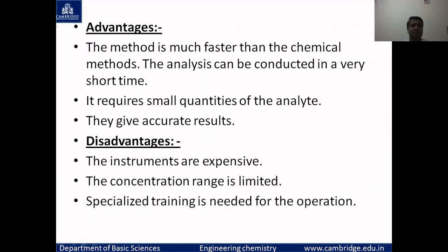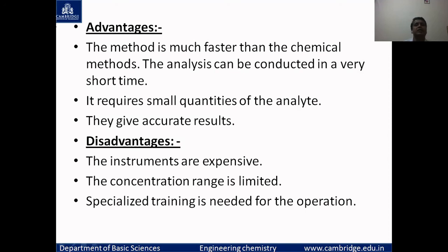What are the advantages of instrumental methods of analysis? This method is much faster than chemical methods. In conventional volumetric methods you need to spend more time, but here the analyte can be determined at a faster rate, giving results quickly in a very short span of time. It requires only small quantities of the analyte — even if present in smaller quantities, it can still be determined — whereas in classical methods, low concentration makes analysis very difficult. It also gives accurate and precise results.